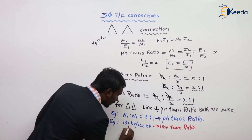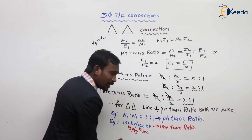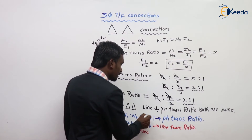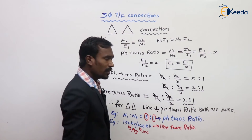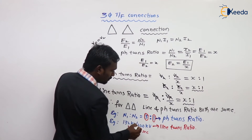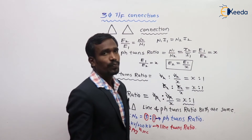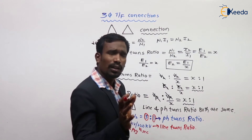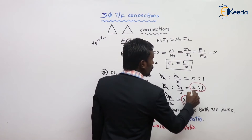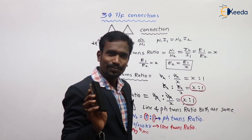When voltages like 132 kV / 220 kV are given, that represents the line voltage of primary and line voltage of secondary — the line turns ratio. When N1 to N2 is given, that is the phase turns ratio. This is just an introduction about line turns ratio and phase turns ratio. For delta-delta, both are the same.